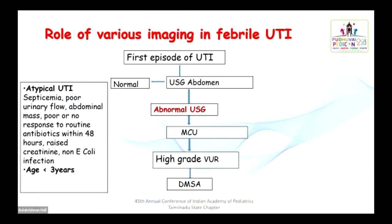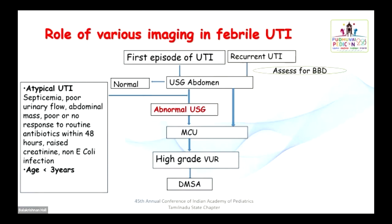Another category requiring imaging is children less than 3 years with atypical UTI — septicemia, poor urinary flow, abdominal mass, poor or no response to routine antibiotics within 48 hours, raised creatinine, or non-E. coli infection — who should undergo ultrasound and further imaging. Another category is recurrent UTI, which is the second episode of UTI. They have to undergo all imaging irrespective of age.